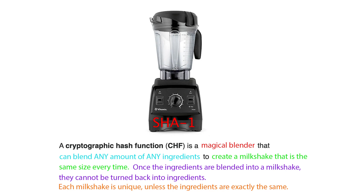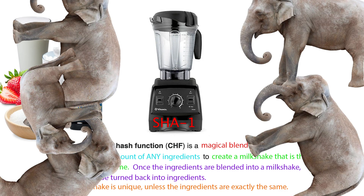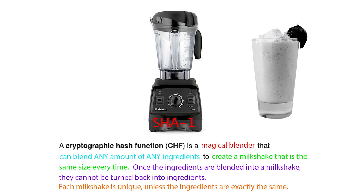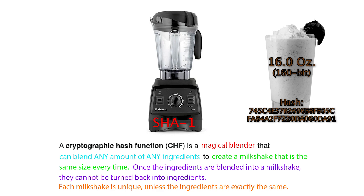To solidify the idea of creating a hash using any size of any type of data, we can look at our magical blender example. Say we want to add some more ingredients to our strawberry milkshake, such as five elephants. We can do that because our magical blender can take any size of any type of data. So we put in five elephants, blend everything up, and we're still going to get a 16-ounce milkshake. It's just going to look different and have different properties, but it's still going to be exactly 16 ounces.